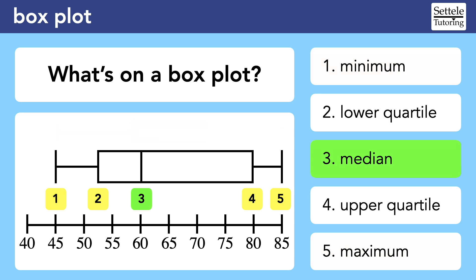Moving on, the median is also very easy to spot. Remember that the median is the middle number when a data set is arranged in numerical order. Appropriately, the median is shown by the line somewhere in the middle of the box. In this case, the median of the data set is 60.